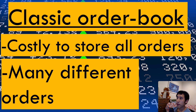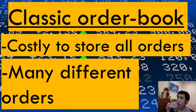Before proceeding further, let's review some background about centralized and decentralized exchanges. Many centralized exchanges for crypto work in a very similar manner to a stock exchange using an order book mechanism. Buyers can put in orders saying they want to buy tokens at certain prices, and sellers can put in sell orders at certain prices. The exchange acts as a middleman and tries to match sell orders and buy orders so that both parties are happy.